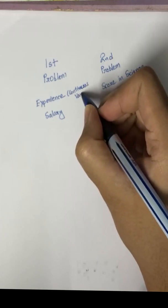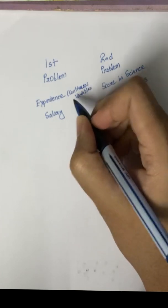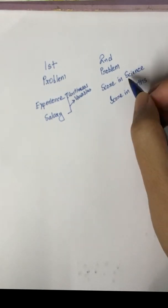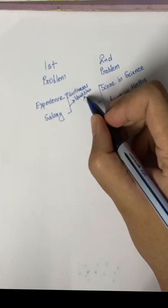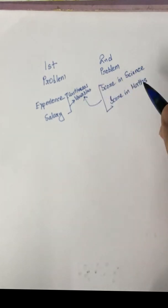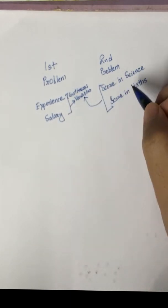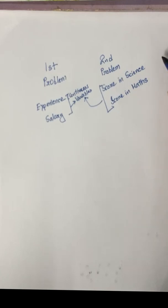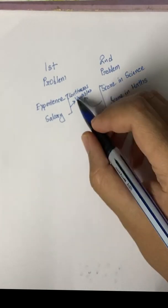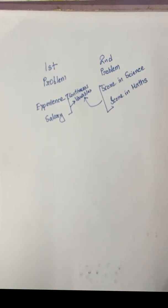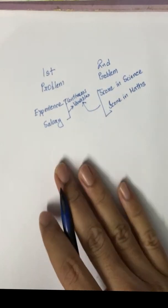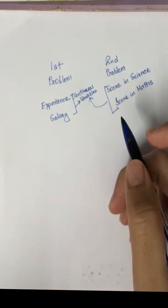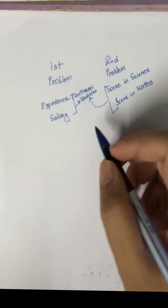So experience and salary both are continuous variables. And the score in science and the score in maths also are continuous variables. That means the values of these four variables can be anything, it can be a decimal, it can be a whole number, whatever. It's not so distinct number, that's why it's called continuous.